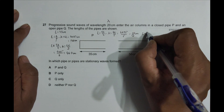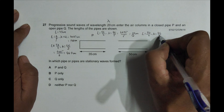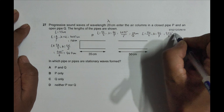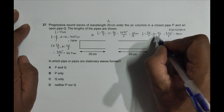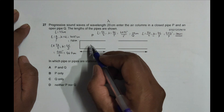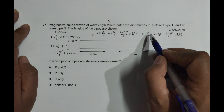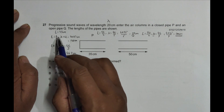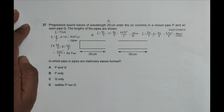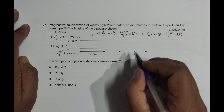Let's try another one: L = 7λ/4, which gives λ = 4L/7 = 4 × 35 / 7 = 20 centimeters. So λ = 20 cm — that means a stationary wave can form here in the closed pipe. This is the seventh harmonic: first, third, fifth, and seventh. So stationary waves can form in the closed pipe P.